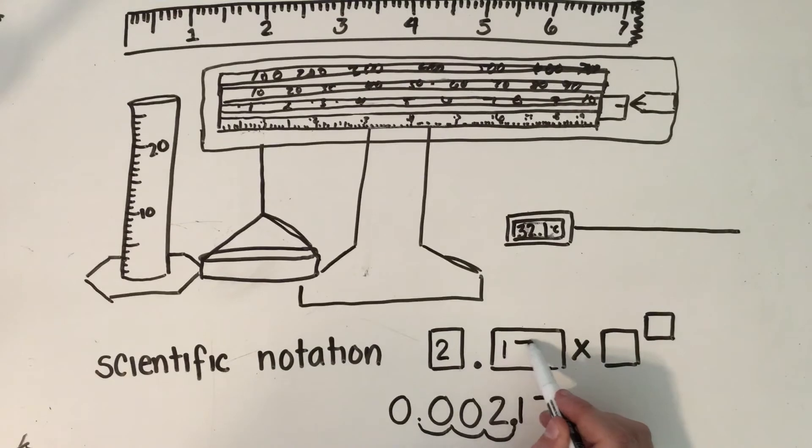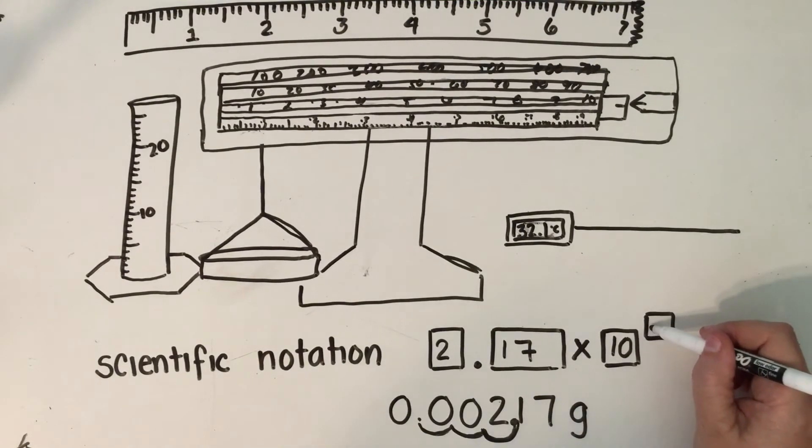With the decimal in that place, so 2.17, that's all of the significant numbers, the ones that weren't the leading zeros. And then it's always times 10 to the something to just show how many places you moved your decimal. So we moved our decimal one, two, three spots to get it behind the seven. That's going to be a negative 3.